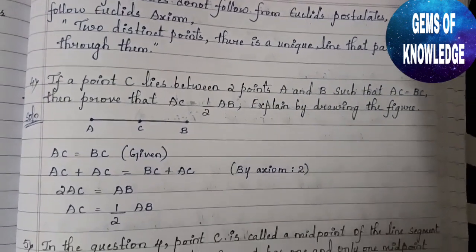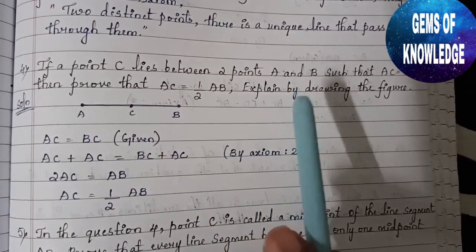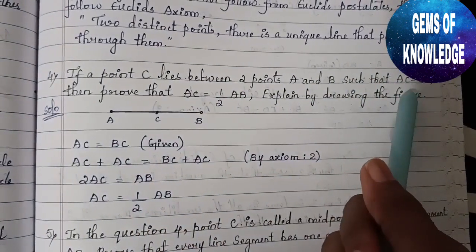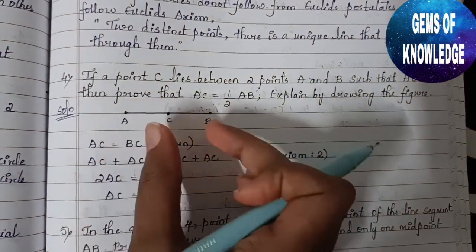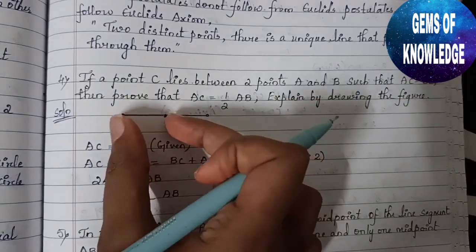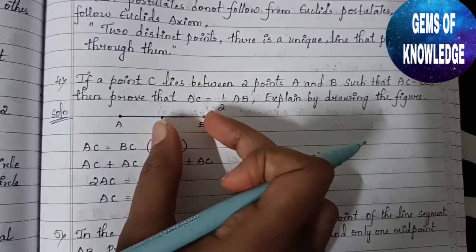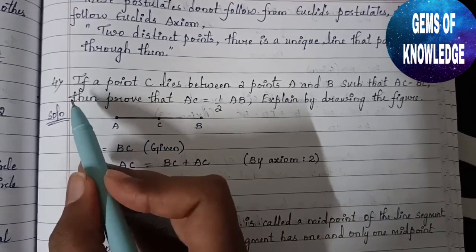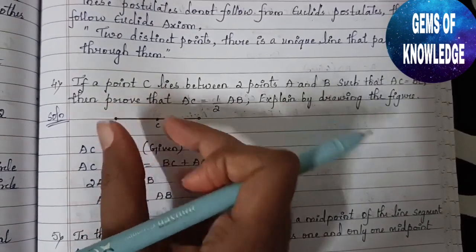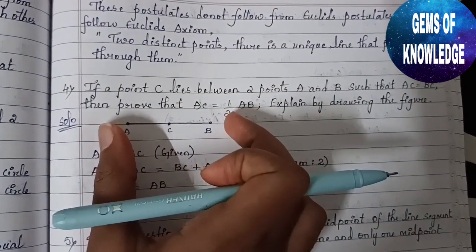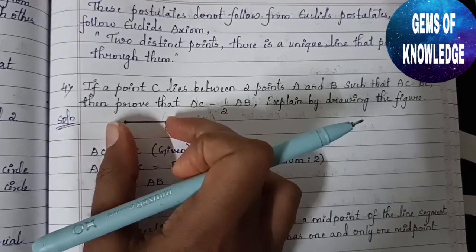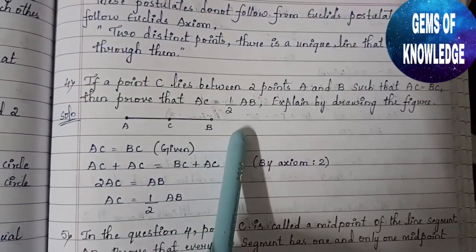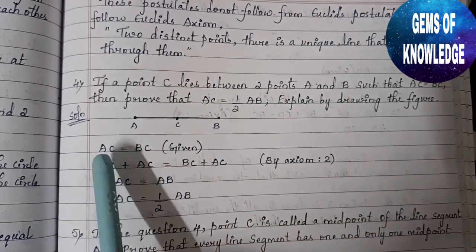The next question: if a point C lies between two points A and B such that AC equals BC — meaning C is exactly the midpoint of AB — then prove that AC equals half of AB. For example, if AB is four centimeters, we have to prove that AC is exactly half, i.e., two centimeters. A rough diagram is already drawn.